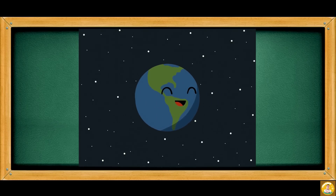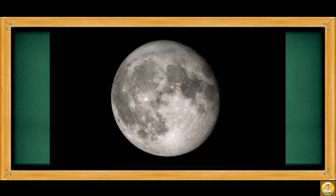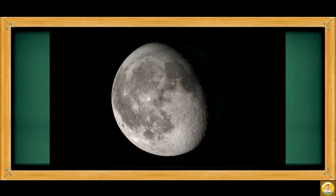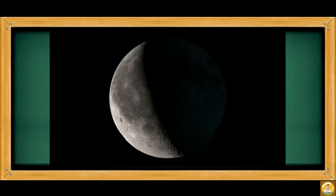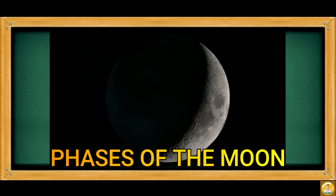Since the moon is revolving around the Earth, the amount of light it reflects from the sun varies as it changes its position. The moon's appearance changes from time to time because the lighted portion on the moon changes as it moves around the Earth. This obvious change in the appearance of the moon is known as the phases of the moon.